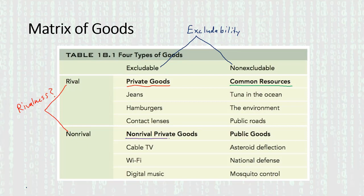We have the term 'non-rival private goods.' Of all these goods, non-rival private goods are probably the least relevant for our purposes — not to say they don't matter, and there's some very interesting economics around them. But for our purposes, the most important goods will be private goods, and then the last category: goods that are both non-rival and non-excludable — public goods. This is what we'll be focusing on for the next several lectures.